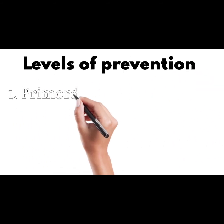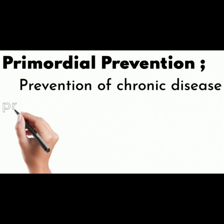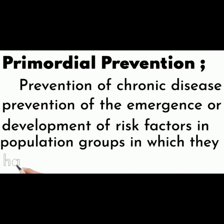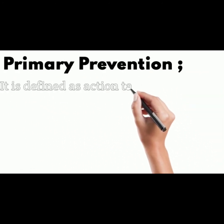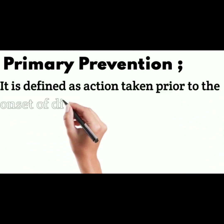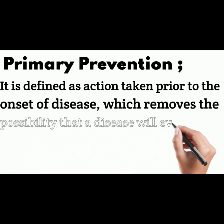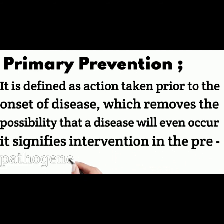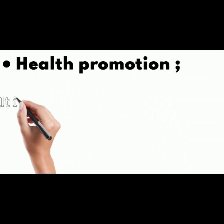Next comes to the levels of prevention. First is primordial prevention — prevention of the emergence or development of risk factors in countries or population groups in which they have not yet appeared. Second is primary prevention, defined as action taken prior to the onset of disease which removes the possibility that a disease will even occur. It signifies interventions in the pre-pathogenesis phase of disease or health problems.